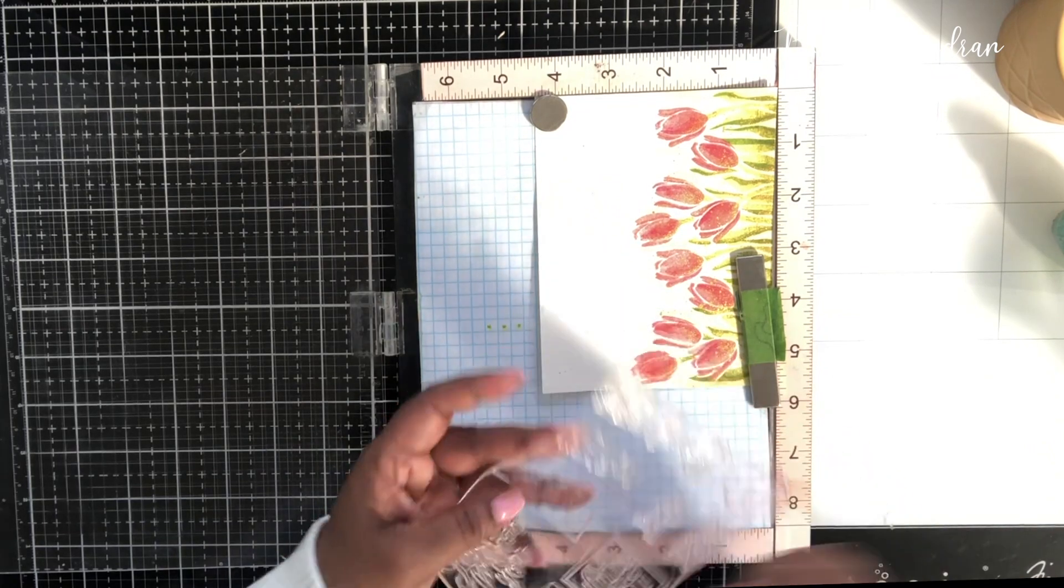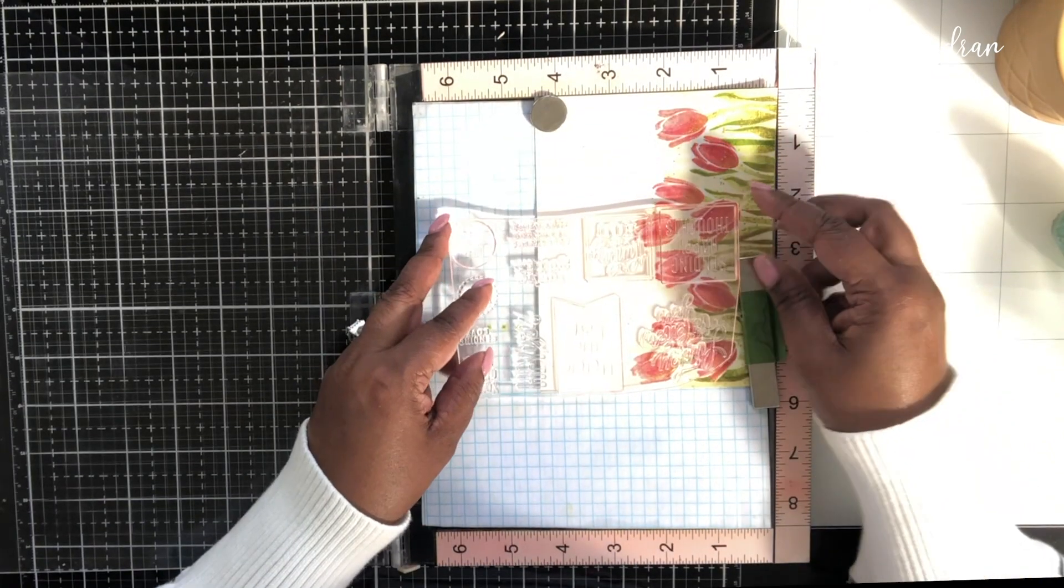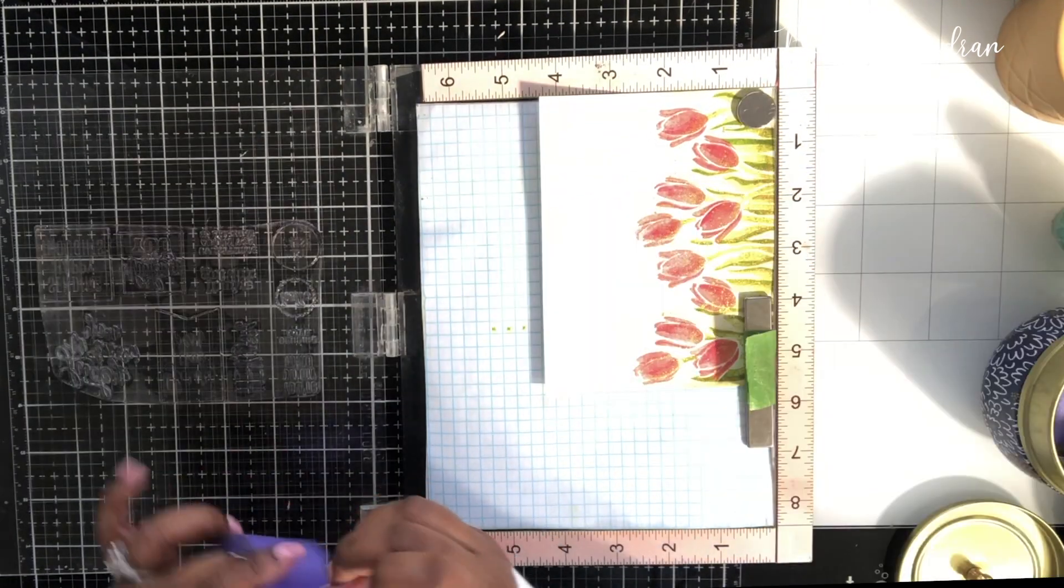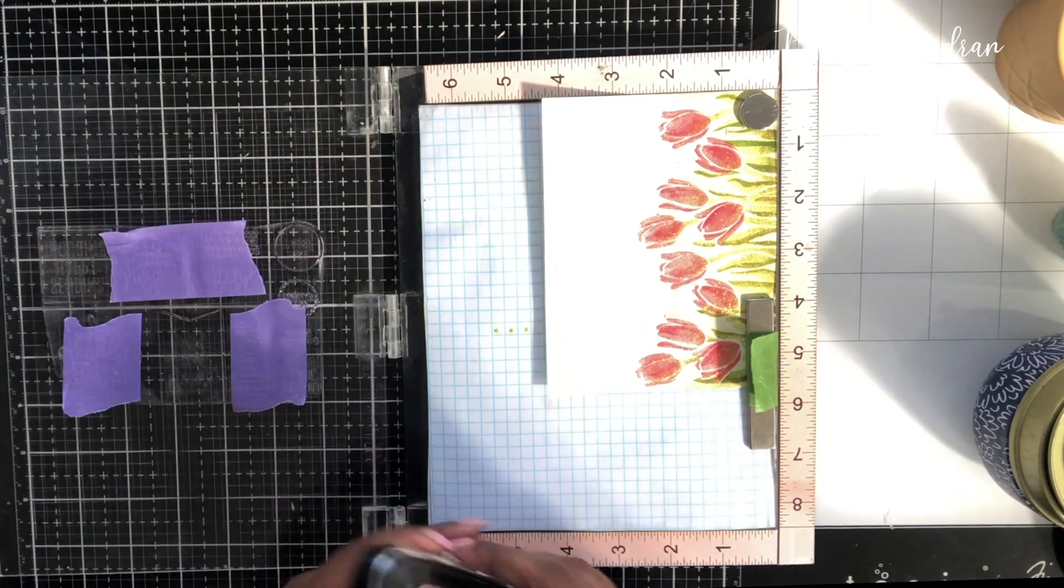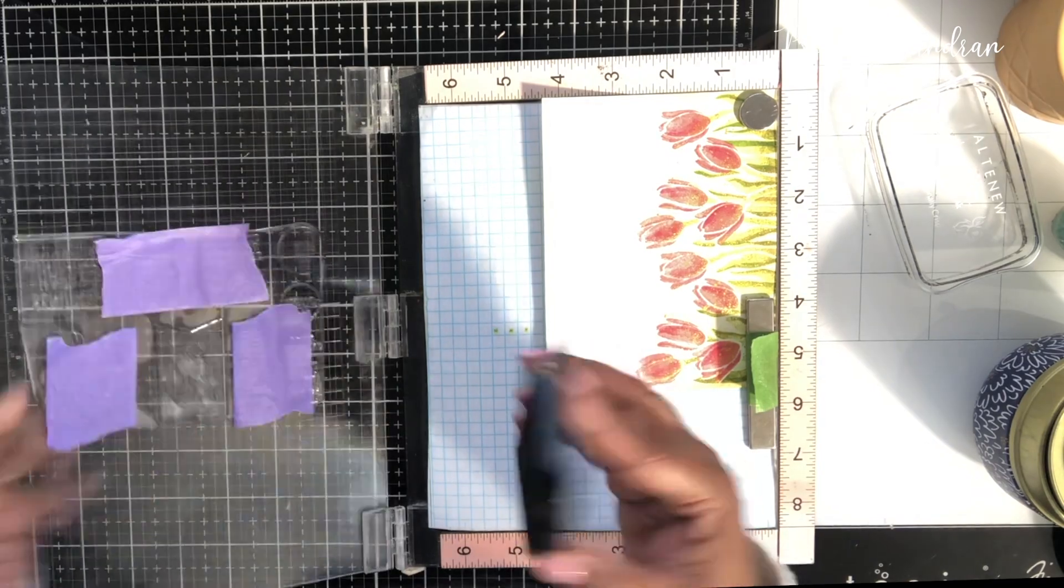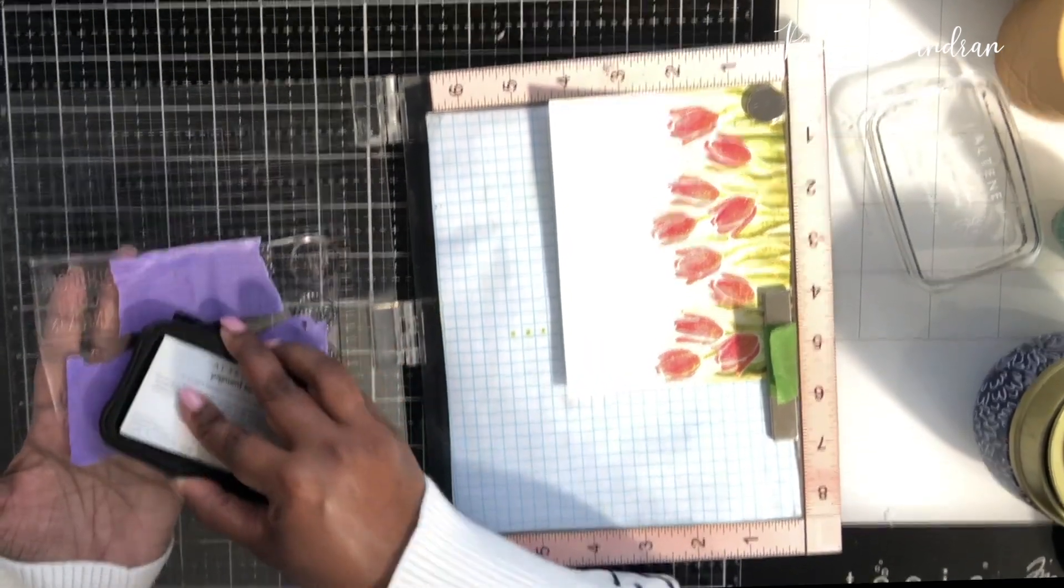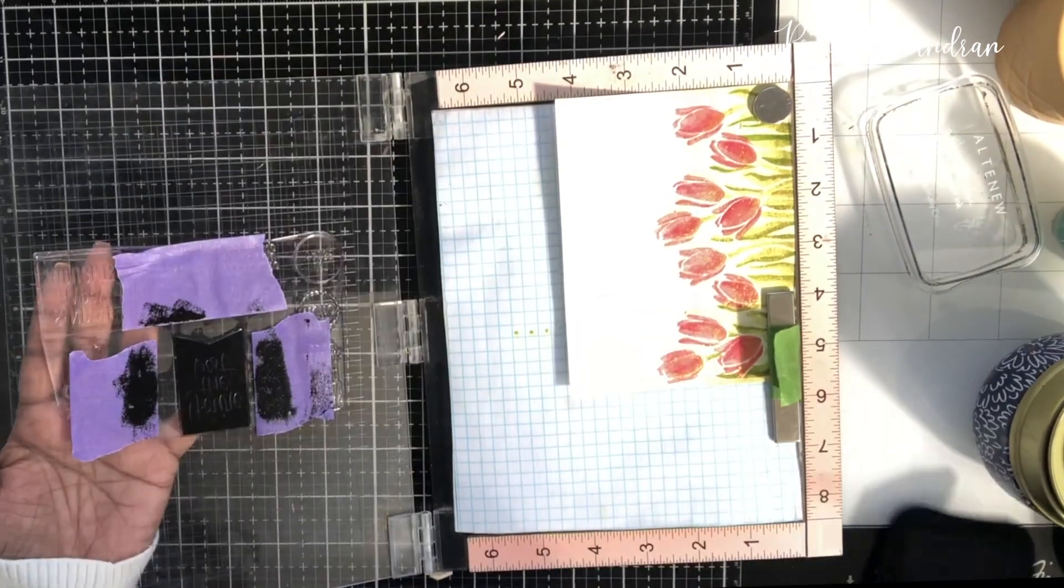It was time to add the sentiment. Now this sentiment is a joint sentiment because there is a die that goes with it. So when you stamp it, you can die cut all the sentiments together. But I did not have the die and I only wanted one particular sentiment in it, a label in it. So what I did is I just put the sentiment where I wanted it.